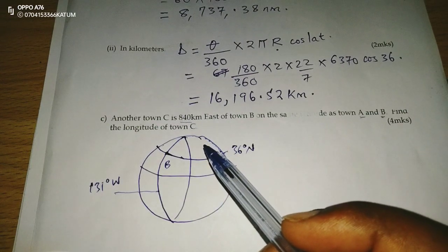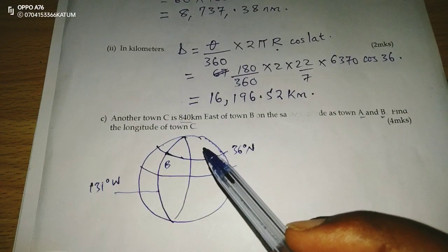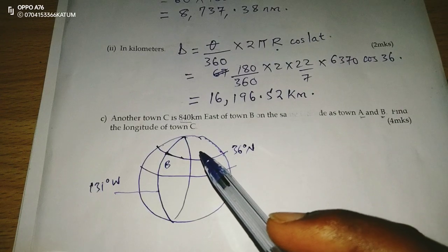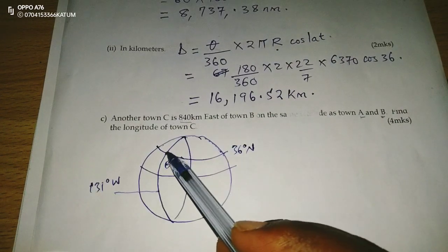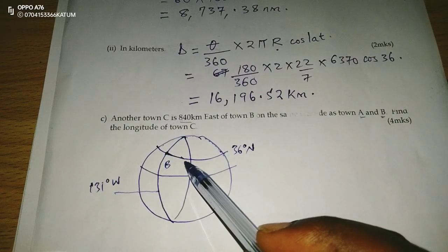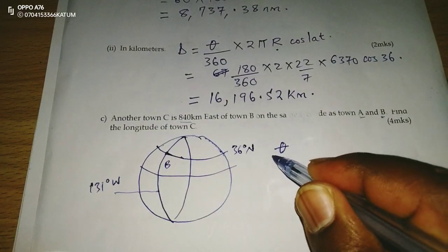That means now for us to get position of town C, we got to calculate the angle difference between B and where C is. We are going to say that the angle difference, which is unknown,